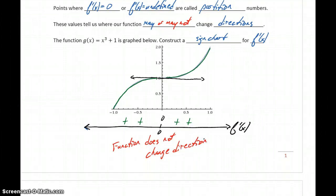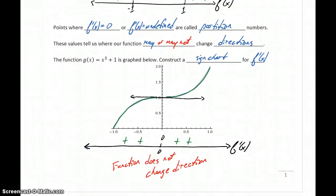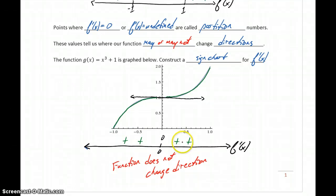So what we're going to be looking at in this section is: given a function, find its derivative, identify any partition numbers — points where the derivative is equal to 0 or undefined — then construct a sign chart to determine the behavior of our function around that point, to see if the function changes from increasing to decreasing or if there is no change in direction, and draw conclusions from that.